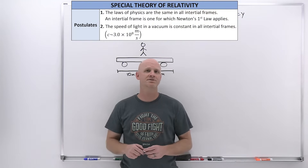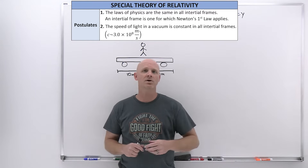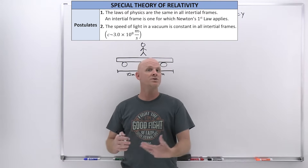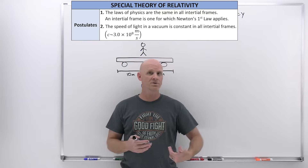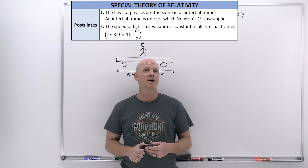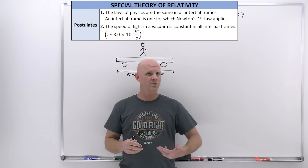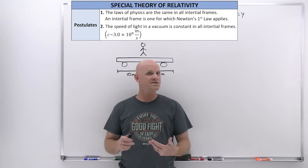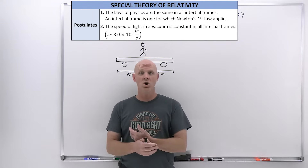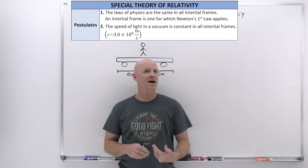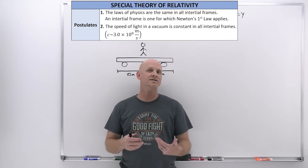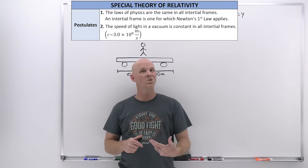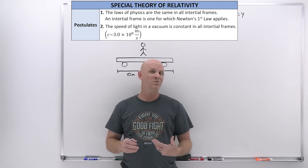The two postulates for the special theory of relativity: the first is that the laws of physics are the same for any inertial frame of reference. An inertial frame is one for which Newton's first law of motion — the law of inertia — applies. Newton's first law says an object in motion stays in motion, or at rest stays at rest, if there's no net force acting on it. So an inertial frame is one with no net force, meaning it's either at rest or moving with constant velocity — no net acceleration, and typically no gravity acting on it either.